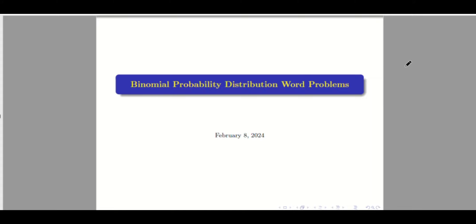Good day. Last time we discussed the discrete probability distribution — how to compute its mean, variance, and standard deviation. Now we will discuss two types of discrete probability distribution: the binomial probability distribution and the Poisson. For this video, I will only discuss the binomial probability distribution and its application on word problems.